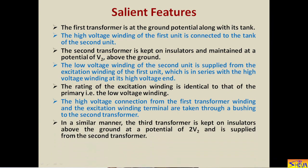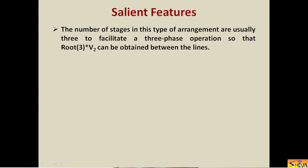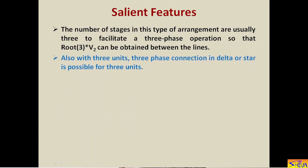In a similar manner, the third transformer is kept on insulators above ground at a potential of twice V2 and is supplied from the second transformer. The number of stages in this type of arrangement is usually three to facilitate three-phase operation, so that √3 × V2 can be obtained between the lines — phase voltage is V2 and line voltage is √3 × V2. With three units, a three-phase connection in delta or star is possible; if units are more than three, this type of connection is not possible. These are the reasons why normally we keep three units.